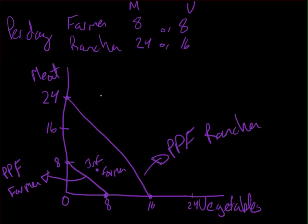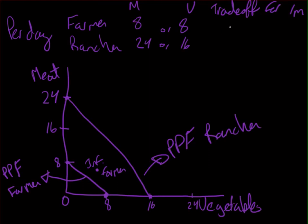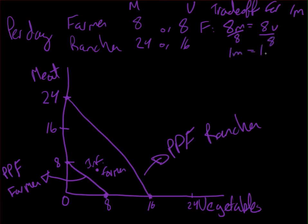Opportunity cost is related to the slope of the PPF, but we can also look at it from a trade-off perspective. For the farmer, producing 8 meat costs 8 vegetables. Dividing both sides by 8, the trade-off is 1 meat costs 1 vegetable. This is where the slope of 1 comes from for the farmer.